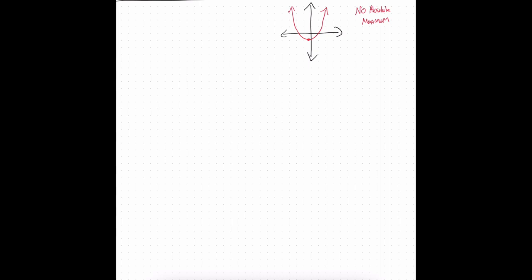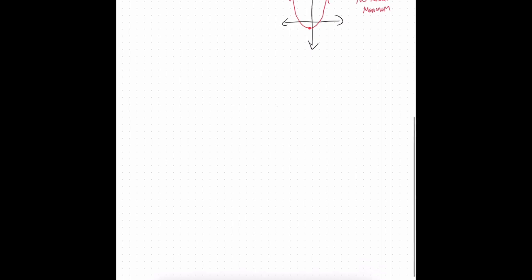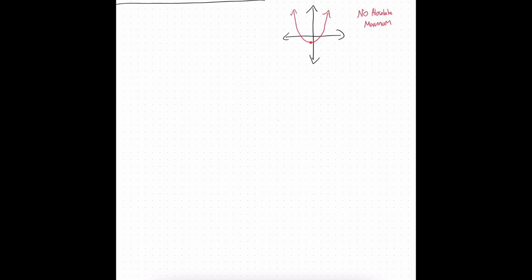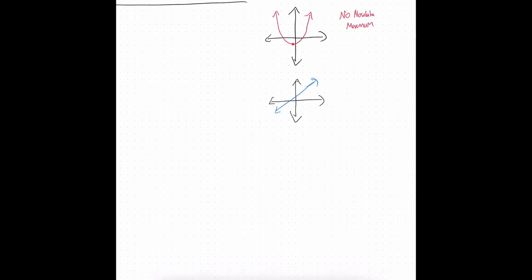This is a very common thing that happens with a lot of functions — some functions don't have a maximum or minimum. This is true for a linear function. If you have a linear function, there's no absolute minimum or absolute maximum, because the function just continues to increase as I go farther to the right, and continues to decrease as I go farther to the left. If I were to just put a negative in front of my quadratic function, all that's going to do is flip the parabola downwards. In that case, I now have an absolute maximum, but no absolute minimum.